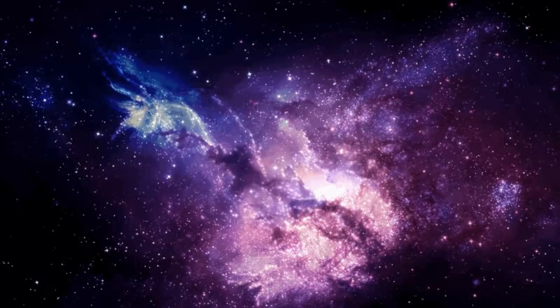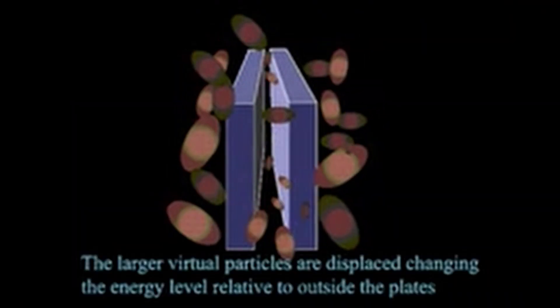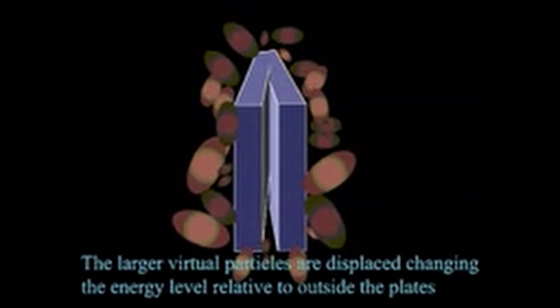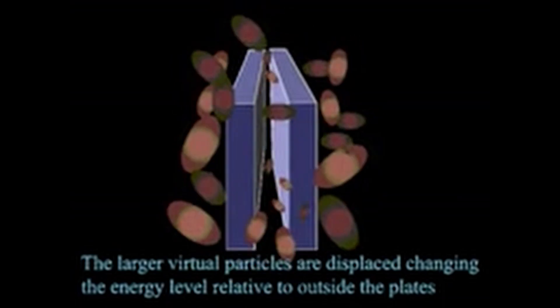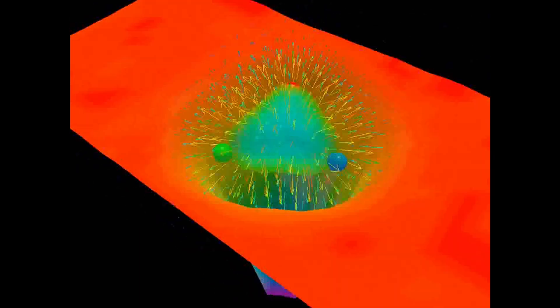We cannot directly observe events or structures beyond the particle horizon. The unobservable regions contain galaxies, quasars, and other cosmic phenomena that are forever beyond our reach. The particle horizon acts as a fundamental limit on what we can observe — even with powerful telescopes, we cannot see beyond this boundary. The unobservable regions remain tantalizing mysteries waiting for future generations of astronomers to explore. In summary, the observable universe provides a glimpse into the vast cosmic tapestry, while the unobservable regions hold secrets yet to be unveiled.